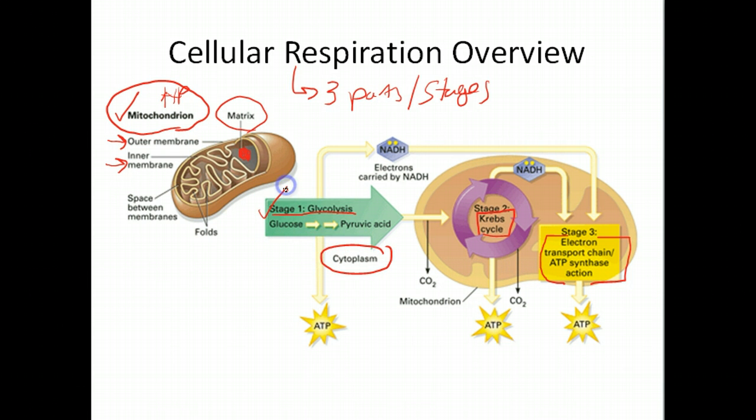You can see glycolysis is occurring out here in the cytoplasm. So for the first stage, glycolysis, it's occurring out here in the cytoplasm. Then for the second stage, for the Krebs cycle, we actually move inside of the mitochondrion. And so the second stage, Krebs cycle, is going to occur in the matrix. So that's the space right here.